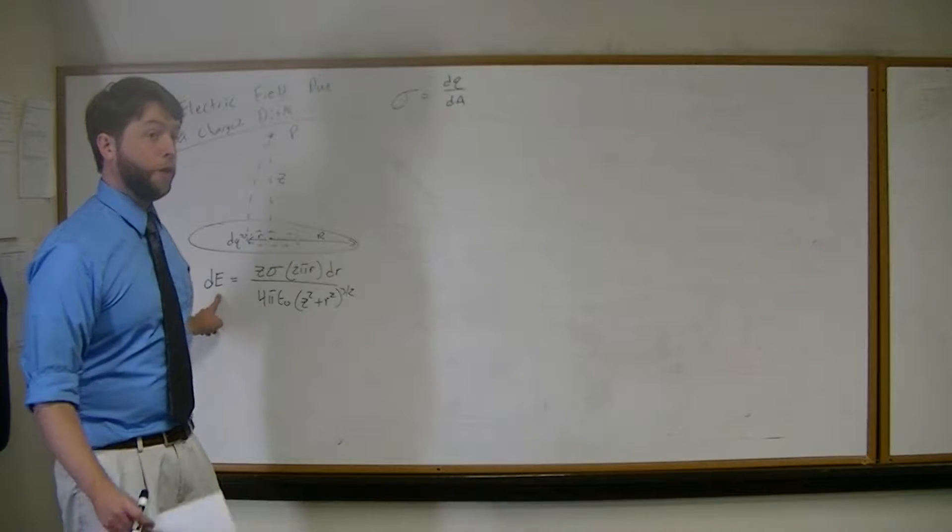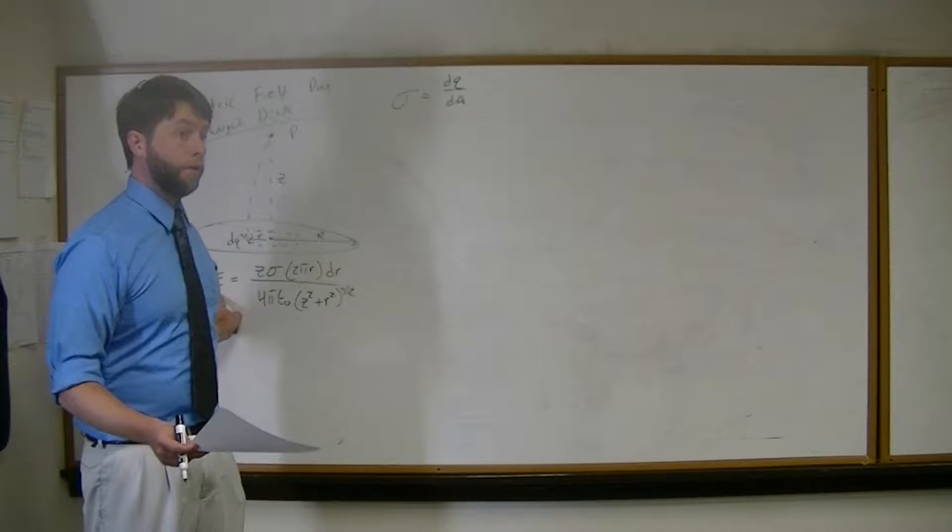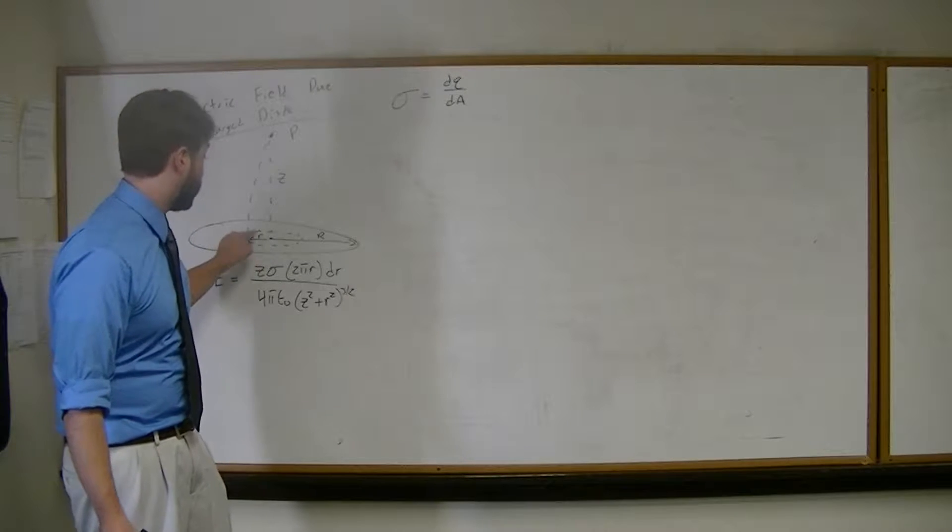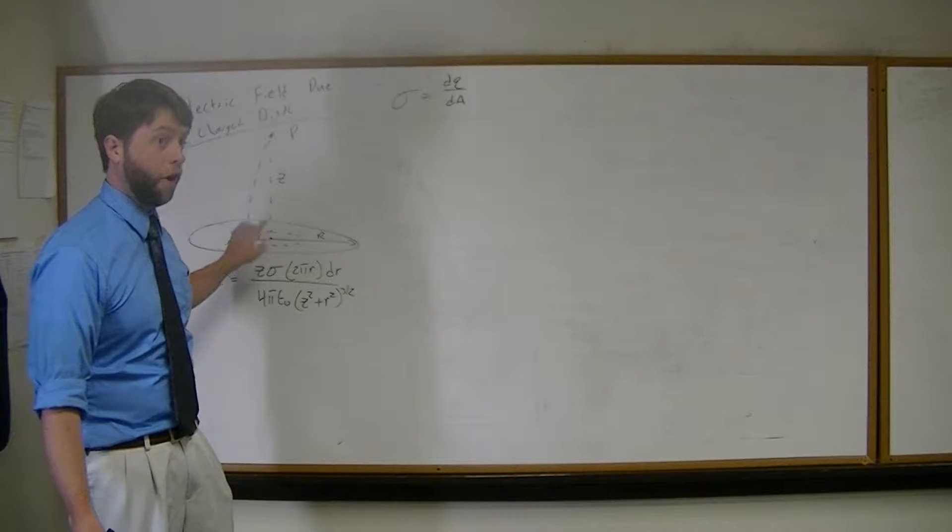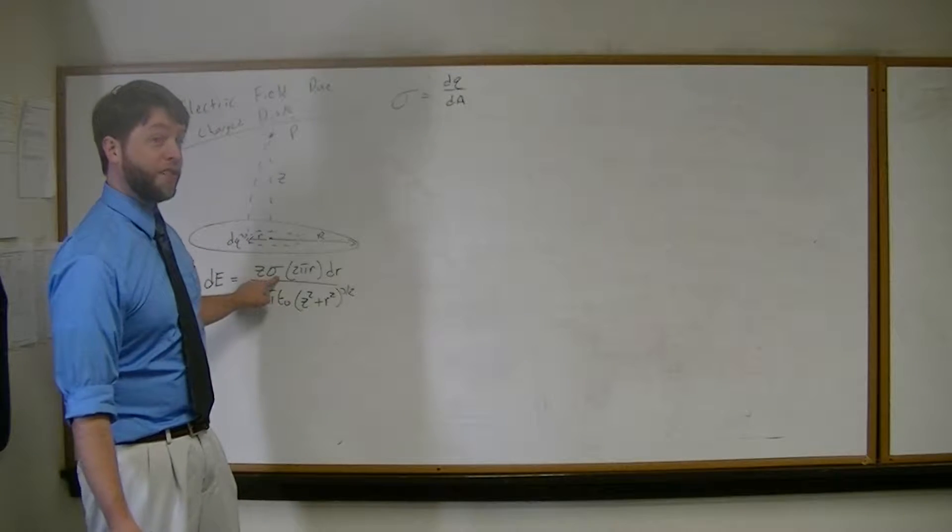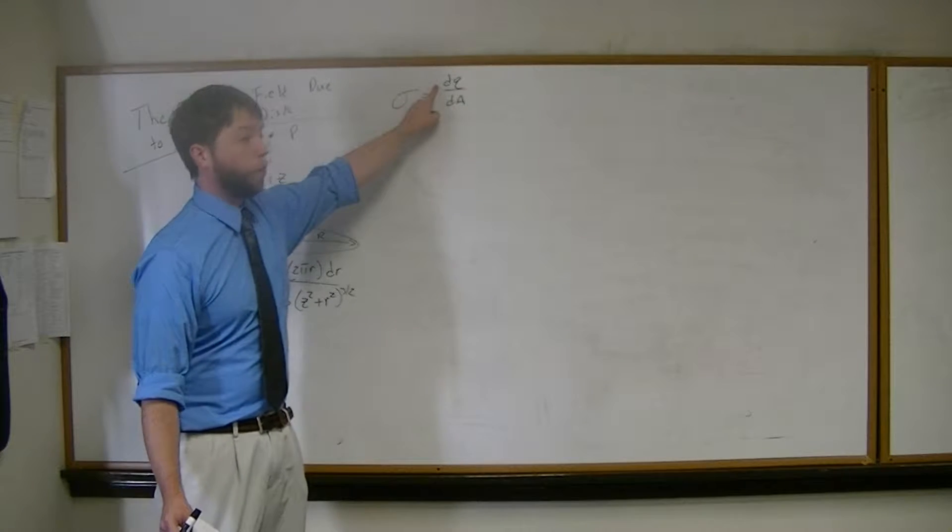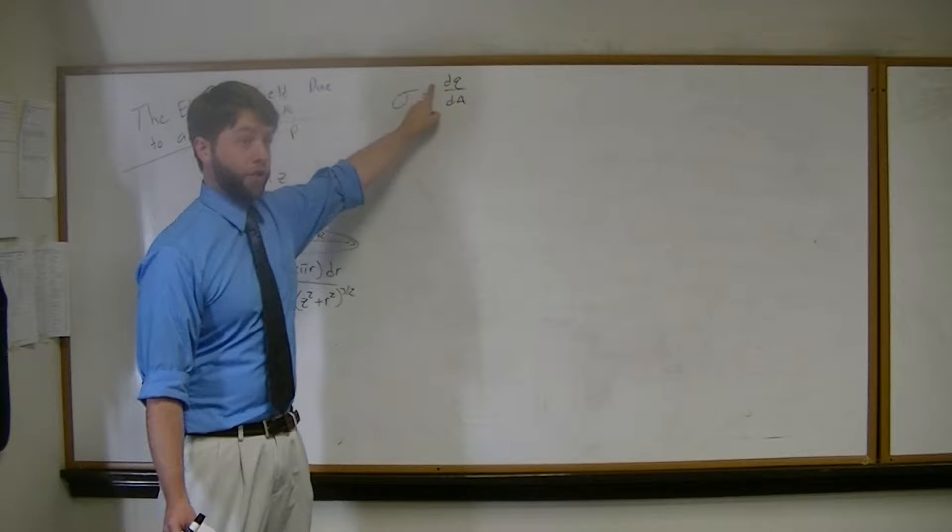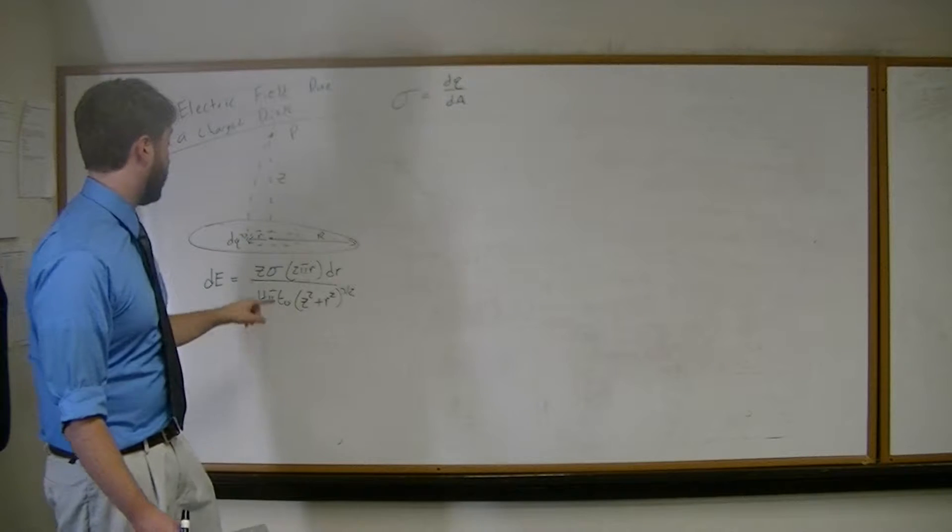We have already solved with the line of charge in the previous example, these small electric field contributions from a small disk shape inside of our bigger disk. So we have z. Here we have sigma. We don't have lambda. Sigma stands for the area charge distribution, so the charge over a small amount of area.